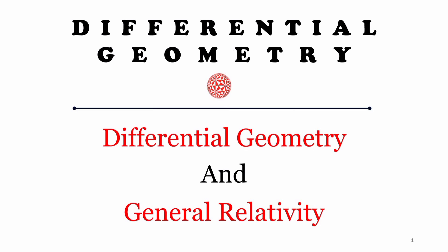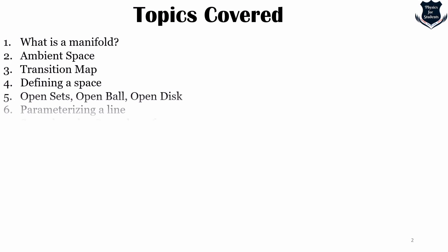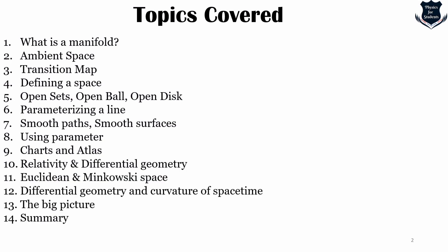Before we start with the concepts, let us look into the topics we are covering. We will cover what is a manifold, what the term ambient space means, what is called a transition map, how we define open sets, open ball and open disk, what is called parameterizing a line, what are smooth paths and smooth surfaces, what are called charts and atlas, and how relativity and differential geometry are related to each other.